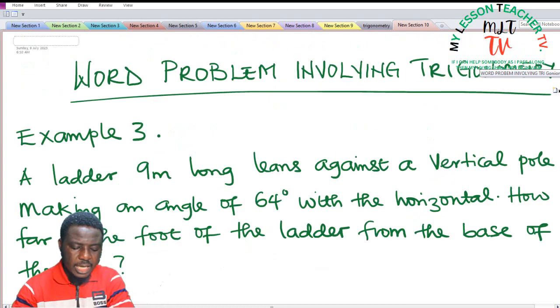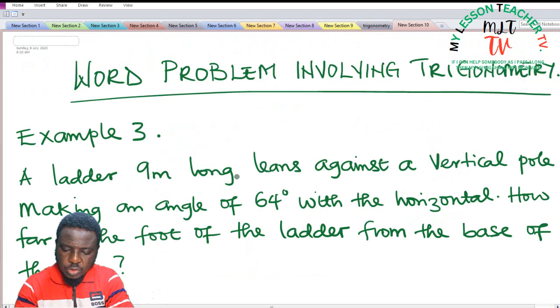Question 3 says: a ladder 9 meters long leans against a vertical pole, making an angle of 64 degrees with the horizontal. How far is the foot of the ladder from the base of the pole?